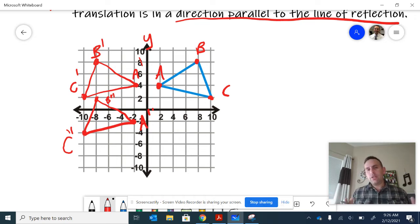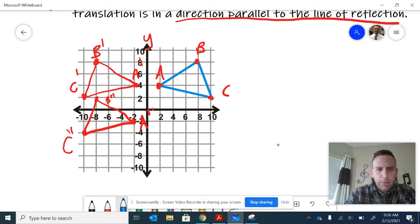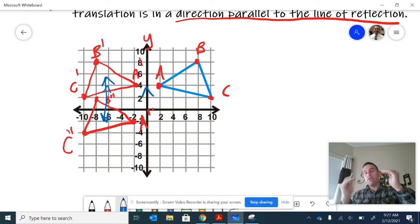What I would challenge you to do is think about what would happen if instead of reflecting about the y-axis and then translating down, you first translated down and then reflected across the y-axis. Notice from the definition that the translation—I moved it down—was parallel to the axis I reflected across.